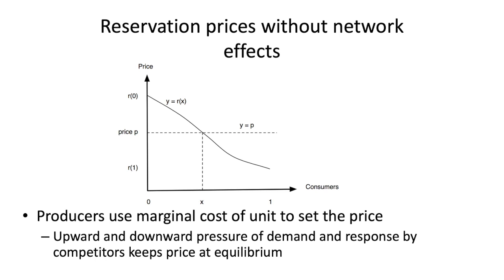Without network effects, it's a pretty normal downward sloping demand curve. The producers use the marginal cost of a unit to set the price, and that's how the price is kept at equilibrium. With network effects though, the number of other users affects how useful that product is.